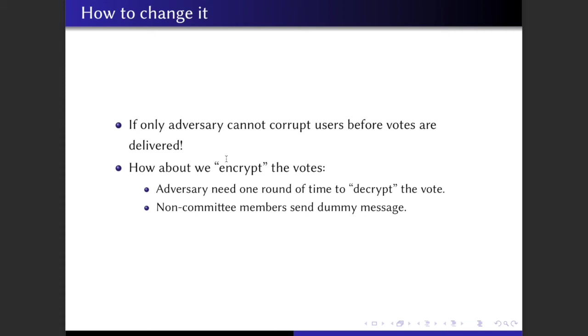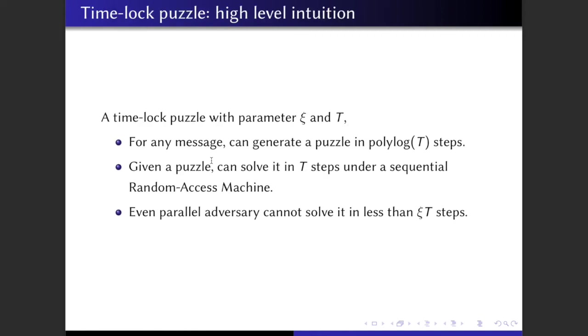So with this in mind, our first idea is: how about we encrypt the votes or encrypt the message, such that the adversary will need at least one round of time to decrypt this message, by the end of which, this message will already be delivered to every other honest user. This is the part where we use a time-lock puzzle.